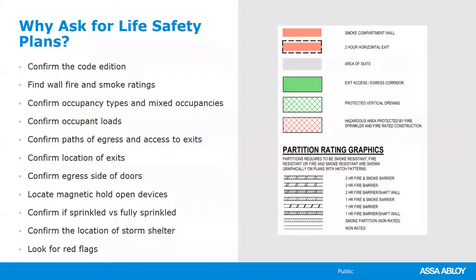Confirm the occupancy types and look for mixed occupancies. You want to confirm occupant loads — they should be listed depending on the complexity of the project. You need to confirm paths of egress and access to exits, as well as the location of exits and confirm which side is the egress side of the door. If the owner wants card readers on some doors and you're locking a door on the path of egress, you may need to consider a special locking arrangement.